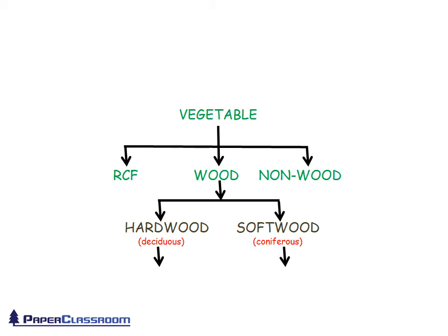Vegetable fibres can be subdivided again into three groups: RCF or reclaimed/recycled fibre, wood fibres from trees, and non-wood fibres. Non-wood fibres come from things like leaf fibres, stem fibres, and bast fibres.